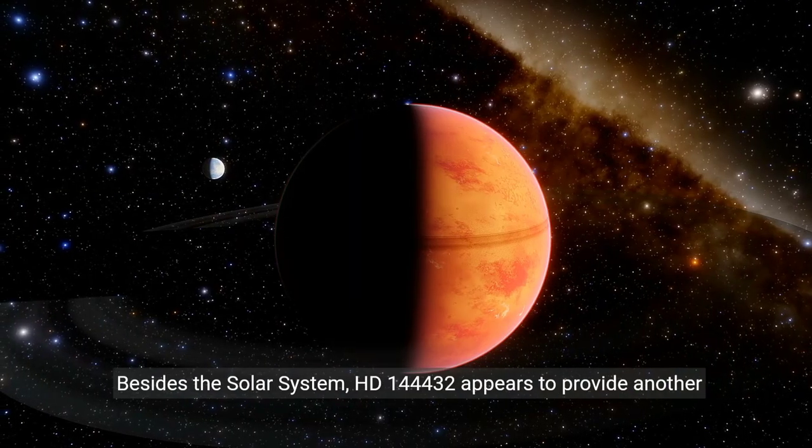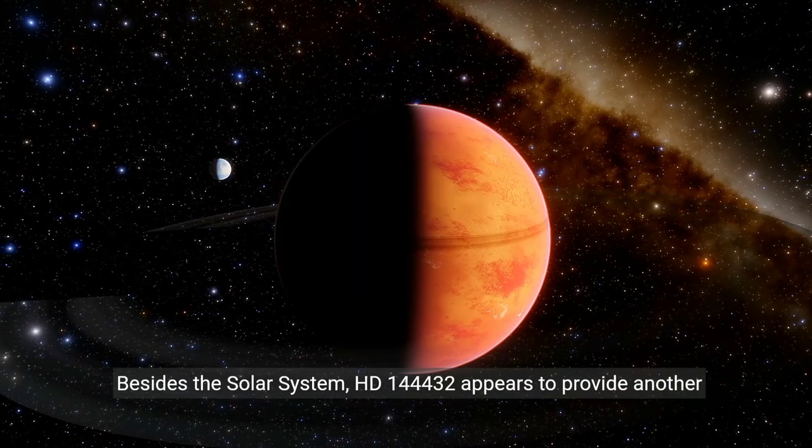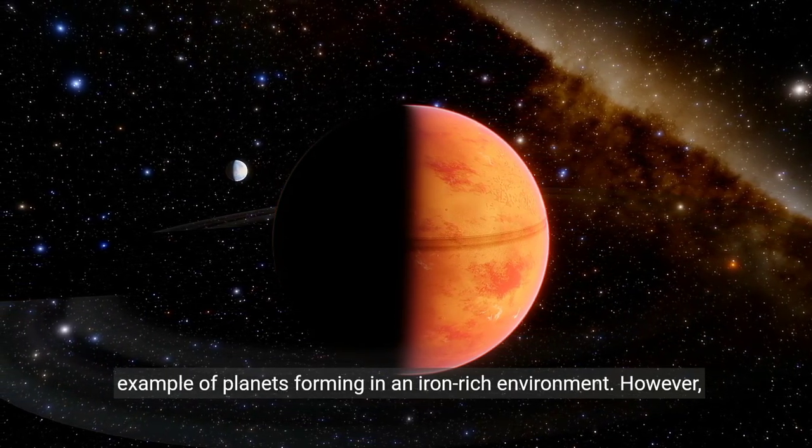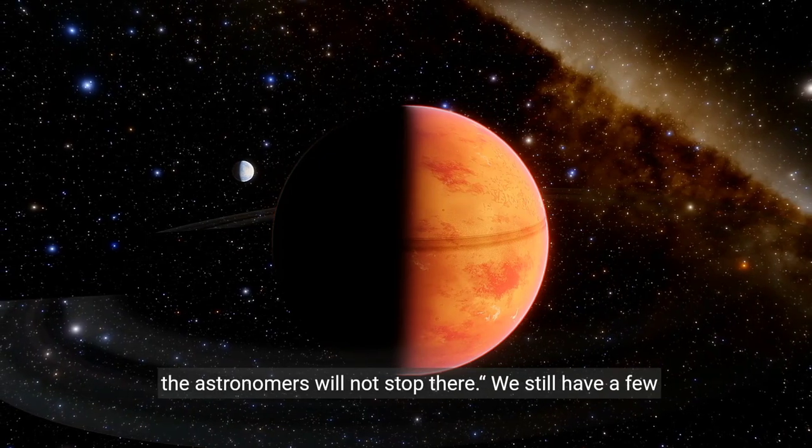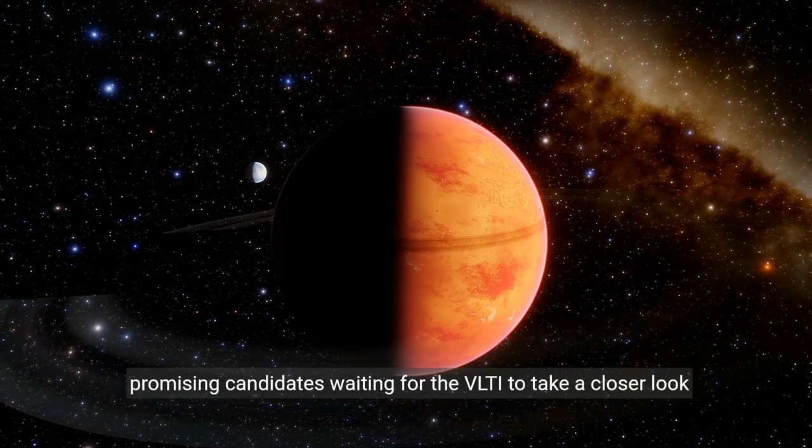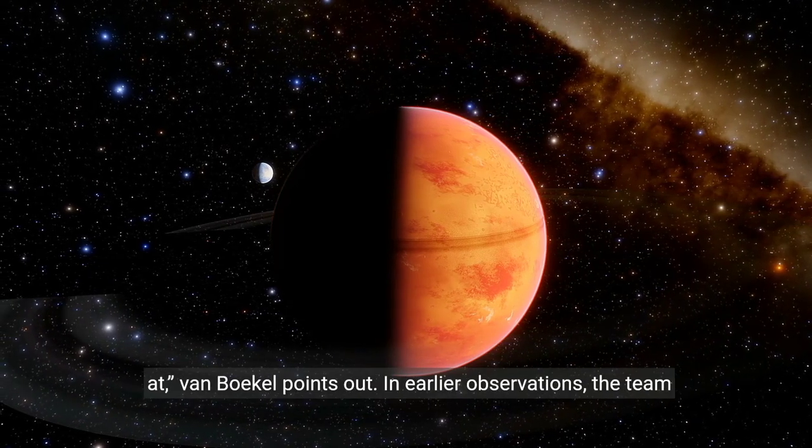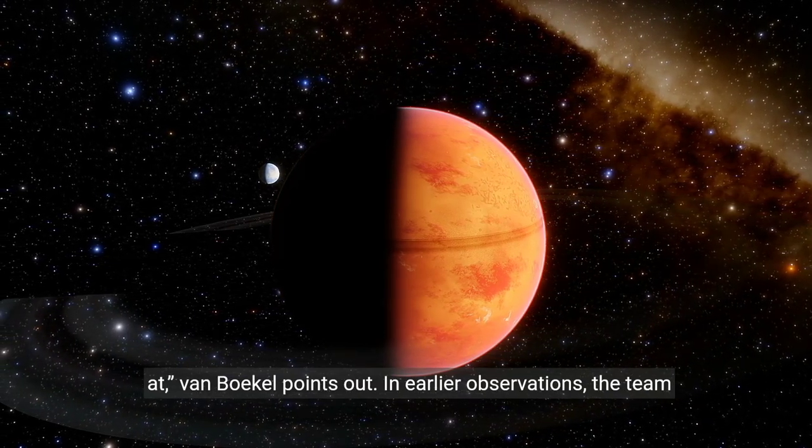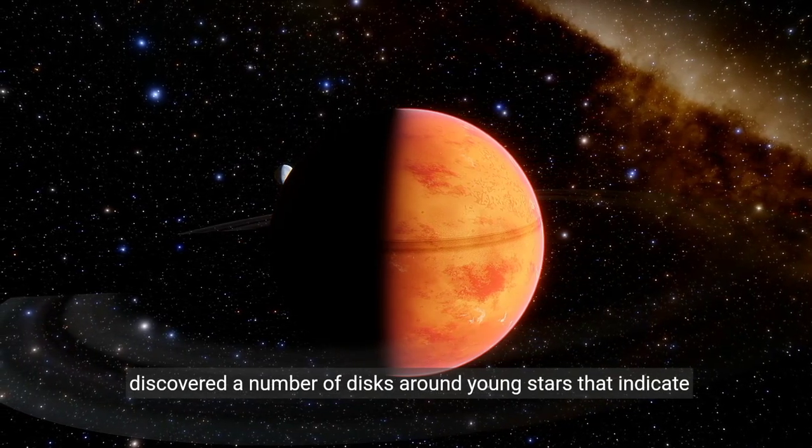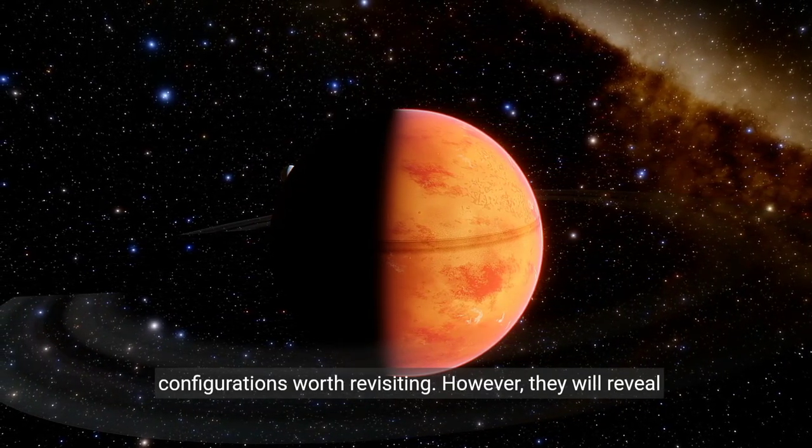Besides the solar system, HD144432 appears to provide another example of planets forming in an iron-rich environment. However, the astronomers will not stop there. We still have a few promising candidates waiting for the VLTI to take a closer look at, as Van Boekel points out. In earlier observations, the team discovered a number of disks around young stars that indicate configurations worth revisiting.